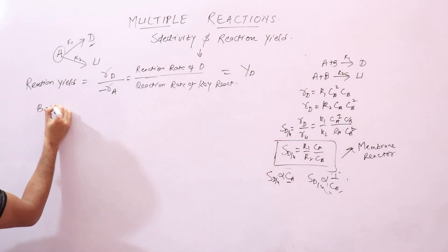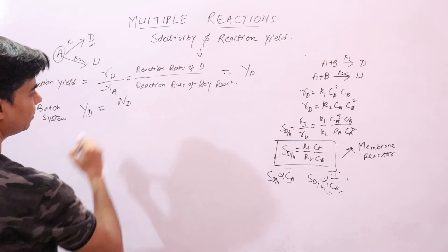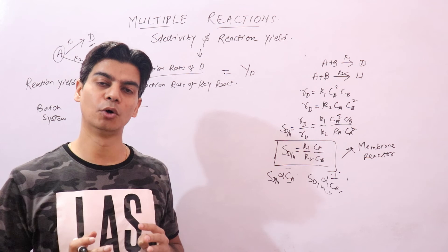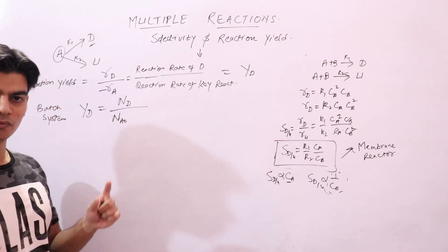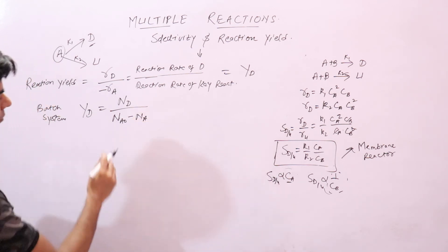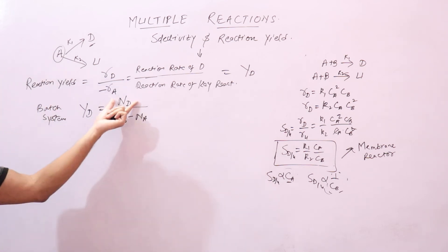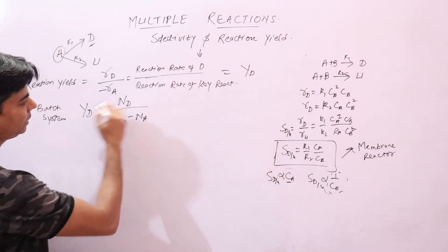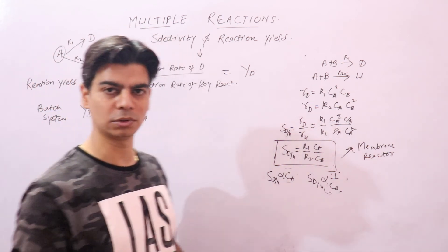This is denoted by Y_D. For a batch system, reaction yield is the number of moles of desired product at the end of the reaction divided by the moles of key reactant consumed, which is (N_A0 − N_A), where N_A0 is the initial moles of A and N_A is the moles at time t. N_D is the number of moles of product formed at the end of the reaction. For batch systems, both selectivity and reaction yield are expressed in terms of number of moles.